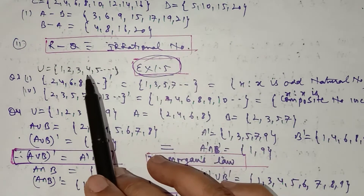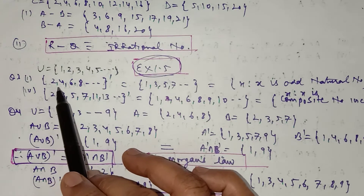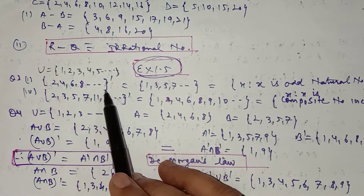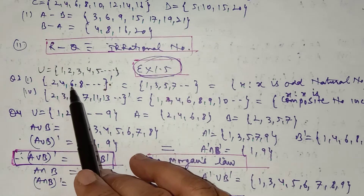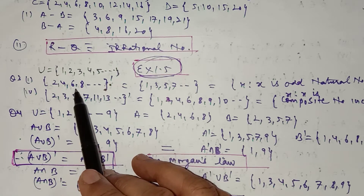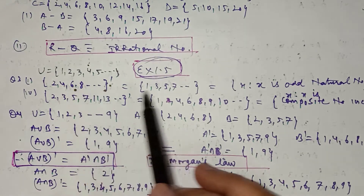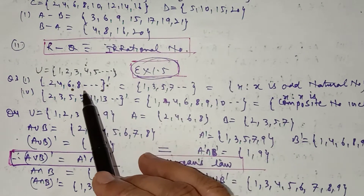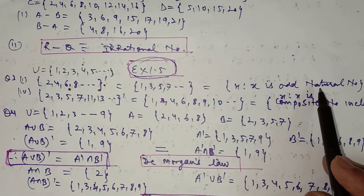In question number 3, the universal set is given as the natural numbers. In the first part, the set is given as the even natural numbers: 2, 4, 6, 8, and so on. Its complement will be all those elements which do not belong to this set but belong to the universal set, so it will be 1, 3, 5, 7, and so on — which is the set of odd natural numbers. You have to write the answer in set builder form because the question is given in set builder form.